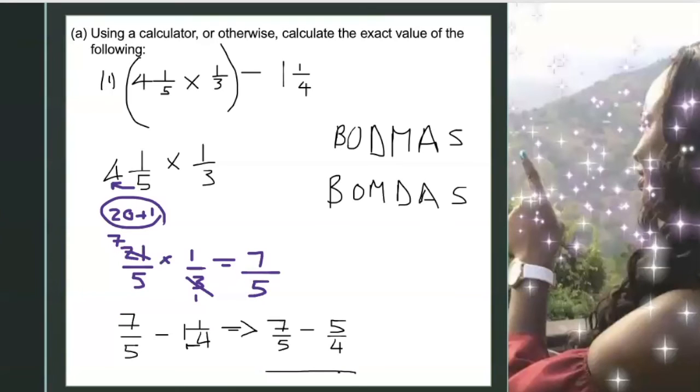Now the LCM, the lowest common multiple for 5 and 4, that's 20. And then we go ahead and divide. So we say 5 into 20 goes 4 times. Then 4 times 7, that's 28.